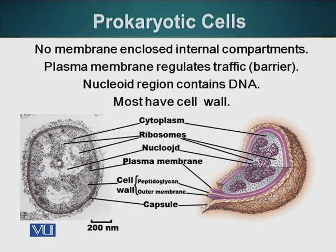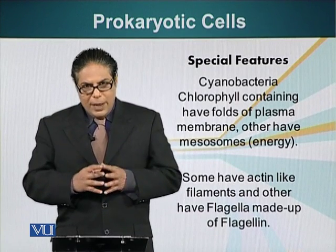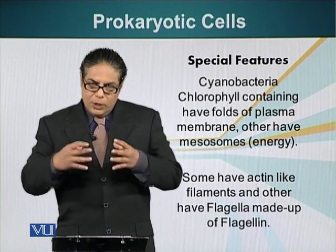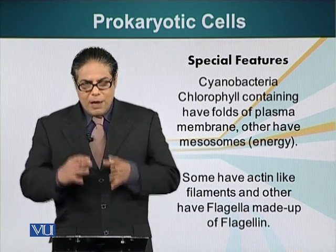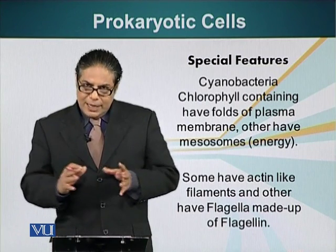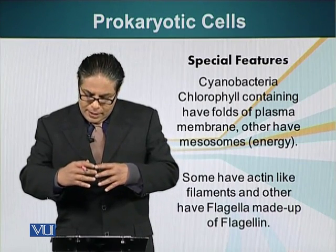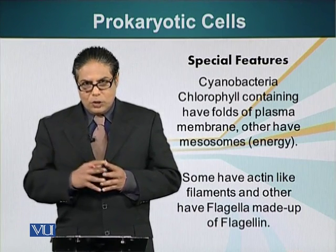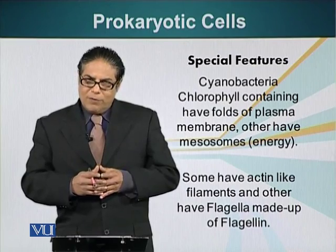Some of these cells have special features. For example, cyanobacteria can perform photosynthesis — a process by which organisms capture light and use its energy to make complex molecules such as glucose, which can be used as a raw material for other molecules. Some bacteria have actin-like filaments, but it is not actual actin. Some bacteria have flagella, but their flagella is not made up of actin filaments as in eukaryotic cells — it is made up of a different type of protein called flagellin.